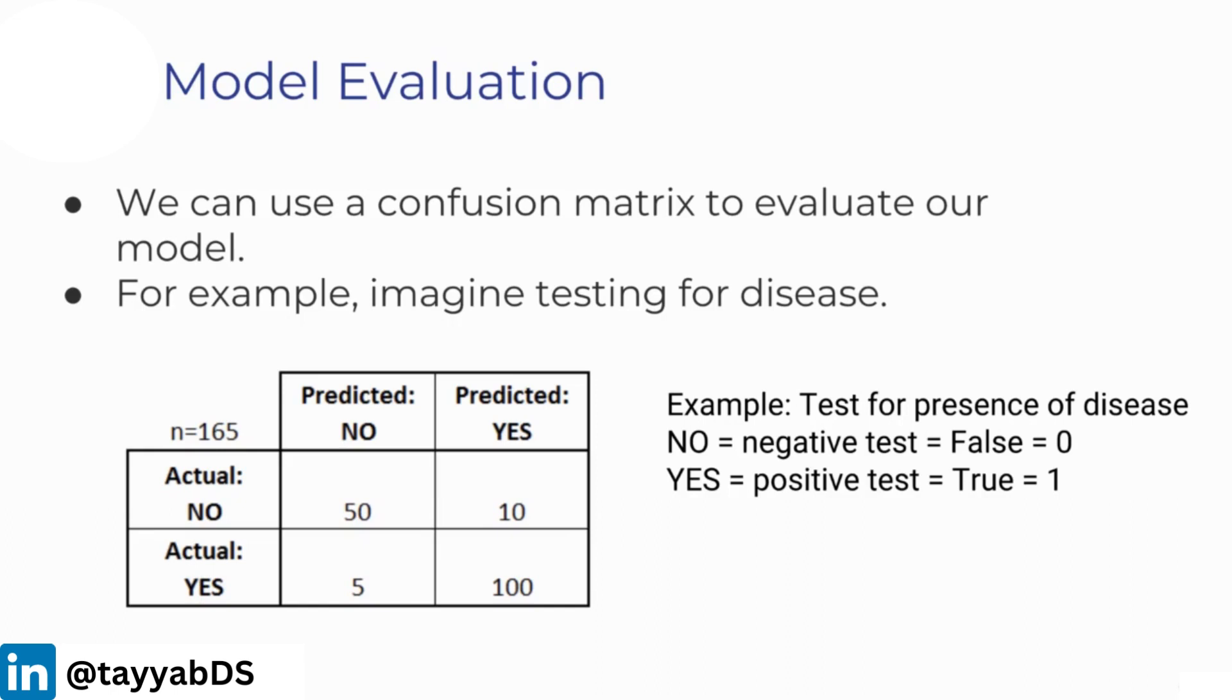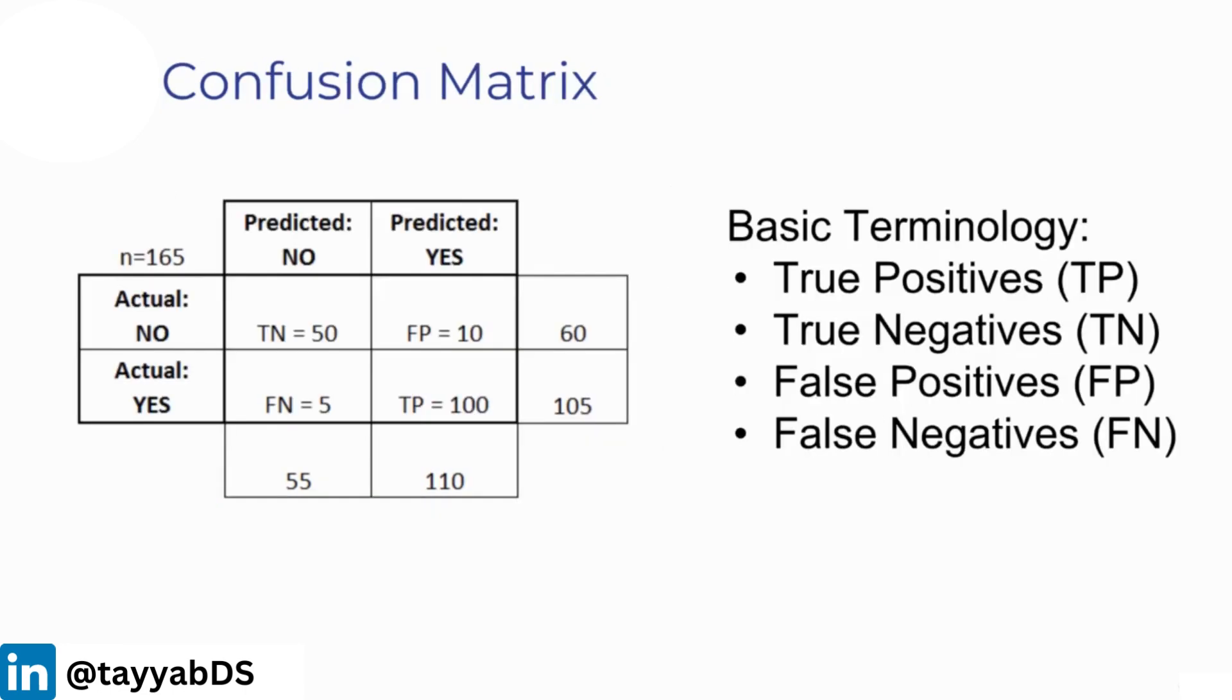Of the condition that people did not have the condition, maybe we're testing for something like cancer. In this particular example, there's 50 people that didn't have cancer that we correctly predicted they don't have cancer. So predicted NO, actual NO: 50. Then, we accidentally predicted 10 people to have the disease, and these people actually did not have the disease. So those 10 were incorrect. Then we also see that we have actual YES and predicted NO as 5, and actual YES and predicted YES as 100.